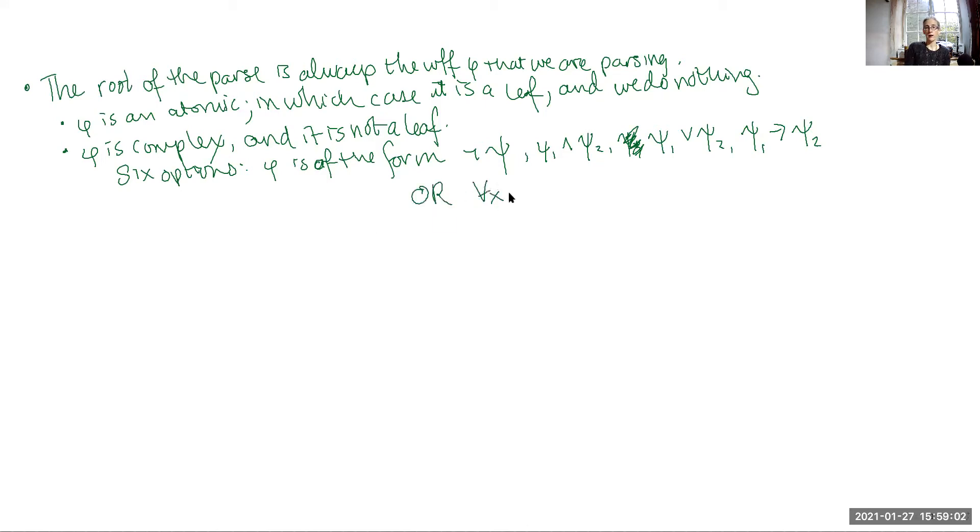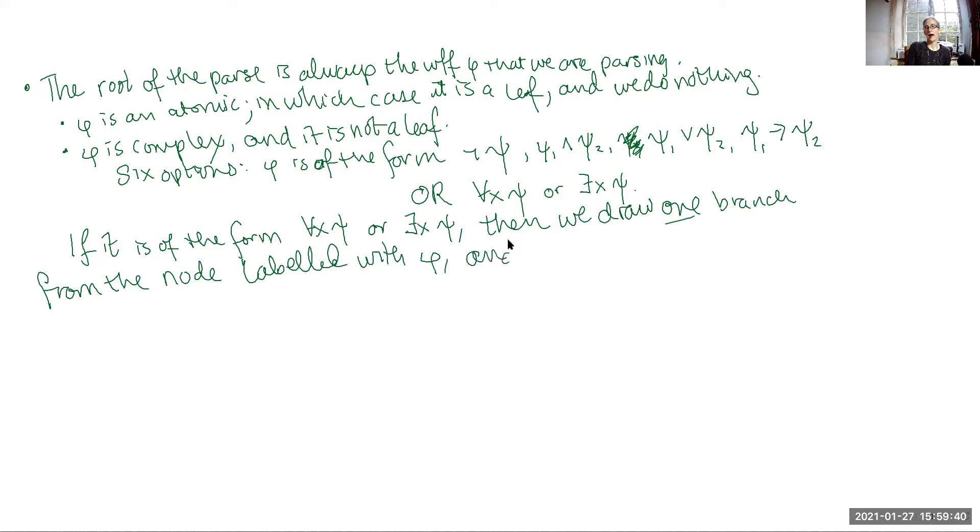Or it is of the form for all x psi or exists x psi. In that case, if it is of the form for all x psi or exists x psi, then we draw one branch coming up from the node that we are at, from the node labeled with phi. And at the end of that branch, we have a node labeled with just psi. So unsurprisingly, the quantifiers work like negation does, because they are both unary operators.